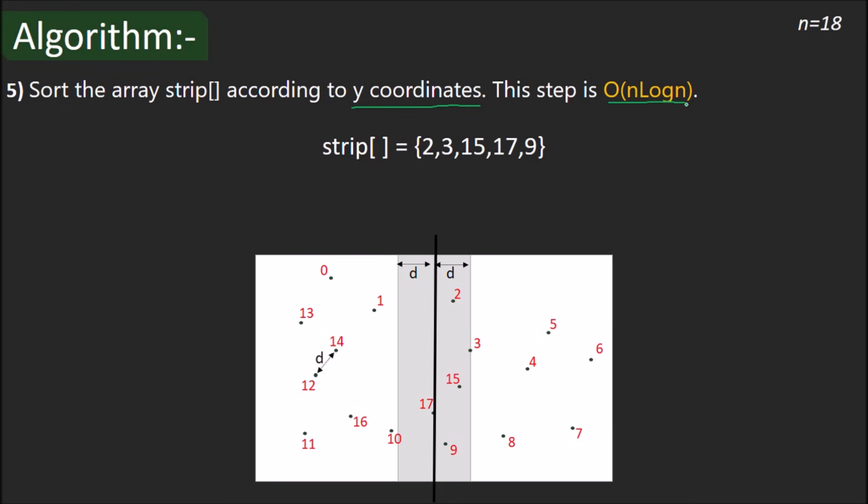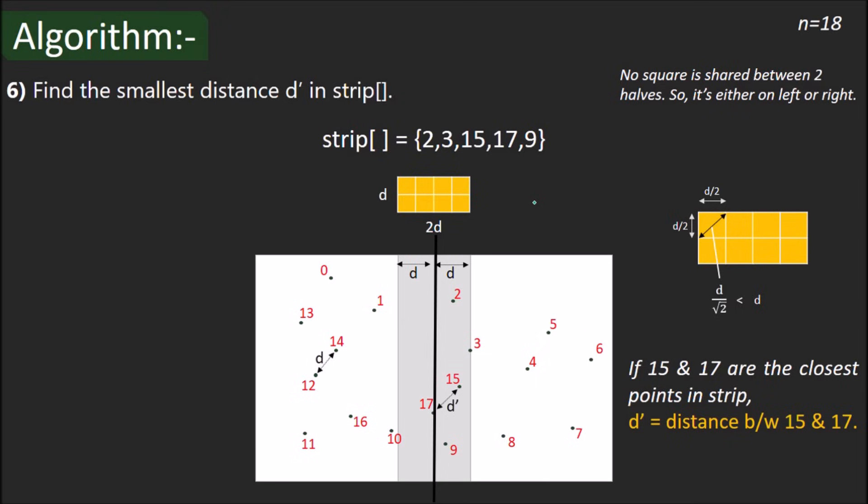This sorting is done in O(n log n). Now comes the important part. It may seem that finding the distance between the closest pair of points in the strip would take O(n²) in worst case scenario but it isn't so. There's an optimization possible here. We need not consider each point in the strip with all the remaining points in the strip. Instead, we will consider only those points which are less than d distance from that point. For that, let us consider a 2d by d rectangle divided into 8 squares. Each of side d/2 such that no square is shared between two halves. Now, no two points can belong to the same d/2 square because the maximum distance between two points on the same square can be d/√2 which is the length of the diagonal. And we already know that the minimum distance between two points in the same half is d and d/√2 which is less than d is not possible.